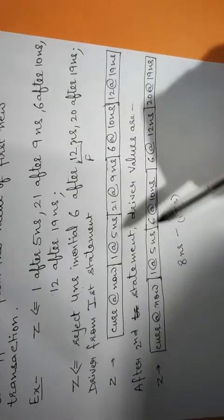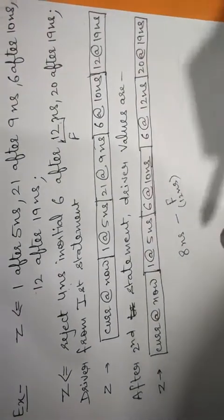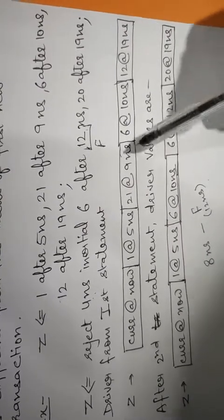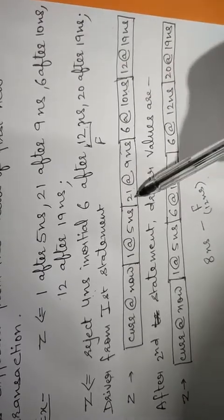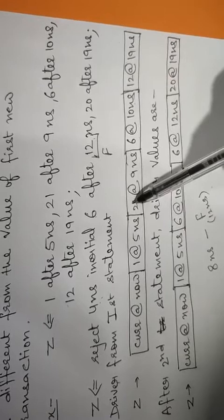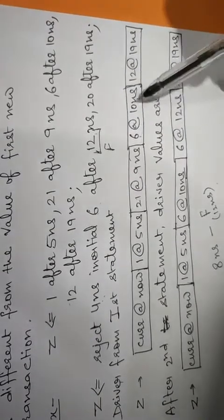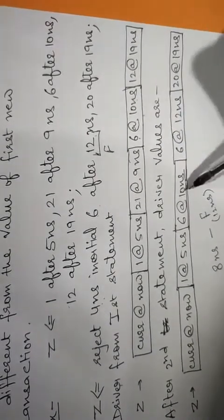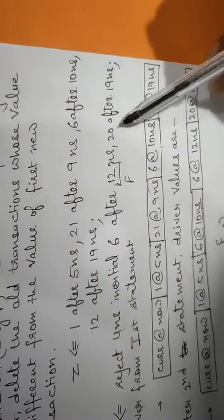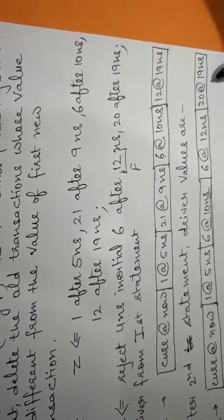So the output will be: current at now, 1 at 5 nanoseconds. Now we have two transactions occurring between 8 and 12 nanoseconds: 21 at 9 nanoseconds and 6 at 10 nanoseconds. For the first, the value is 21 but the inertial delay value is 6 — since these two values are different, we delete this transaction. The next transaction has the same value as the new transaction, so it is retained. Then the next new transaction is added to the signal driver. Finally, 20 at 90 nanoseconds — since 90 nanoseconds is higher than 12 nanoseconds, that value will be added to the signal driver.